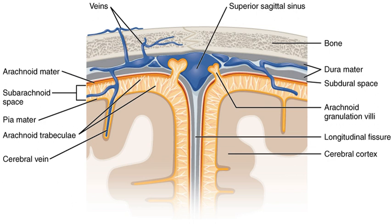The pia mater is a very delicate membrane. It is the meningeal envelope that firmly adheres to the surface of the brain and spinal cord, following all of the brain's contours. It is a very thin membrane composed of fibrous tissue covered on its outer surface by a sheet of flat cells thought to be impermeable to fluid. The pia mater is pierced by blood vessels to the brain and spinal cord, and its capillaries nourish the brain.